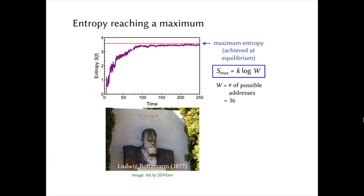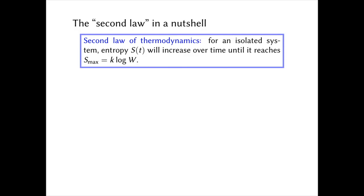We can summarize what this little game has shown us as our version of the second law of thermodynamics, which says that for an isolated system — one not interacting with the environment, like our Bunimovich stadium billiards game — entropy increases over time until it reaches the maximum given by the Boltzmann equation. It's a law. As an undergraduate, I always took it as a given — especially if it's literally carved in stone. But is this in fact universally true? What I'm going to show you next will perhaps shock you.